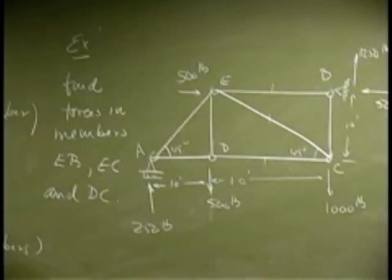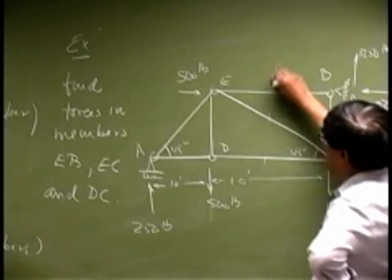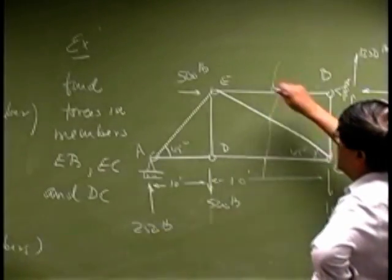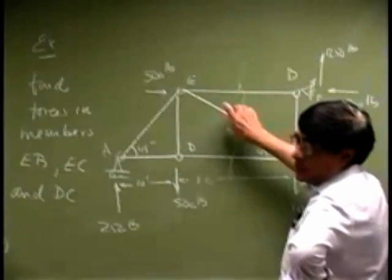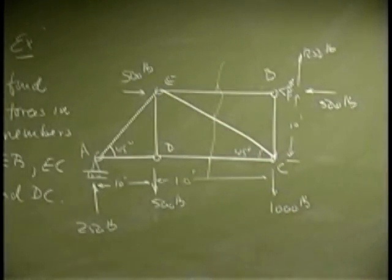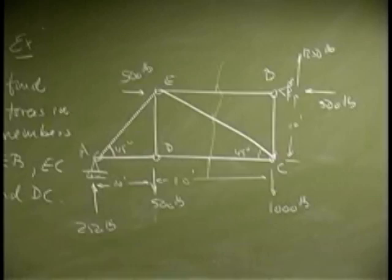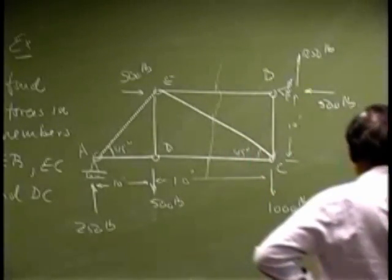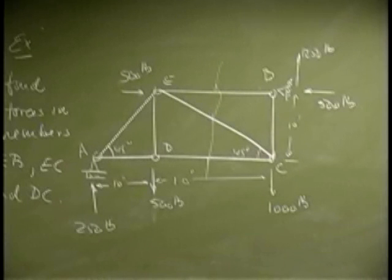All right, so we're going to pass the section. We go all the way from here and the idea is to take this member out, take this member out and this member out, and then draw free bodies for the left part of the truss as well as the right part of the truss. So let's look at the free bodies again.